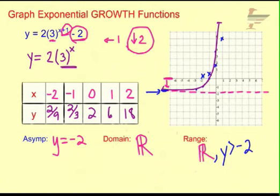We're just going to slowly, slowly, slowly get closer and closer and closer to it. So y is going to be greater than negative 2. And there is graphing a growth function, exponential growth function.